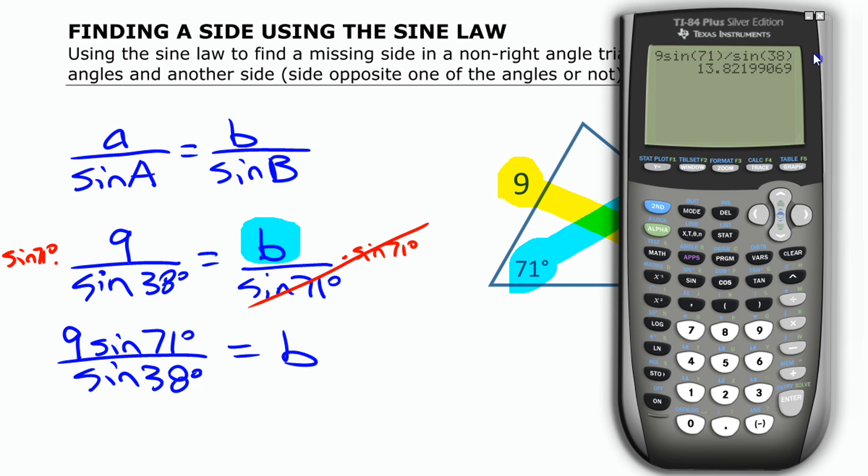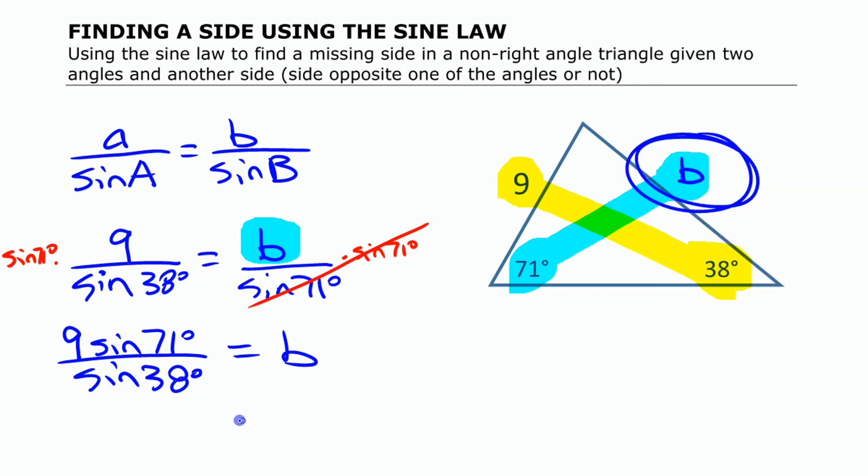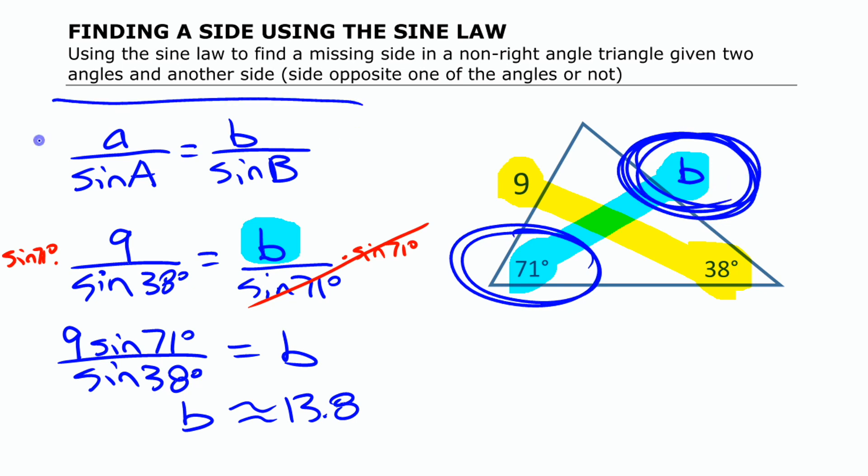If you leave off that closing bracket, it's not going to work properly. It's not going to evaluate it the way you want it to. So that is my side length, roughly 13.8. You can double-check that it looks like your answer makes sense. This angle is bigger, so you expect this side to be bigger. The sine law says that the ratio of the side and the sine of the angle across from it is equal for all pairs of sides. So the bigger the angle, the bigger the side that is across from it.